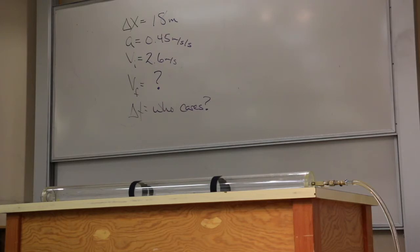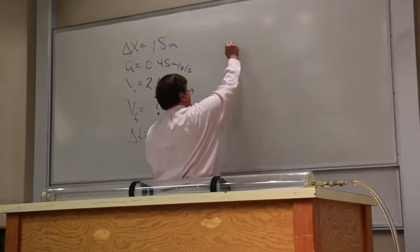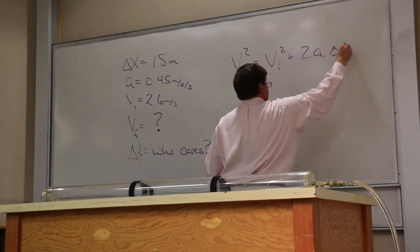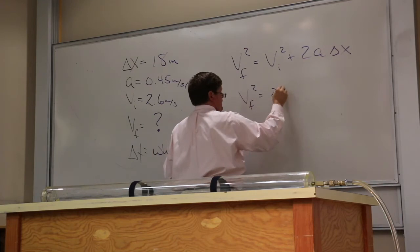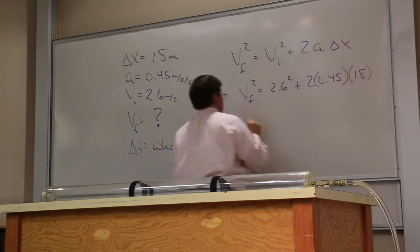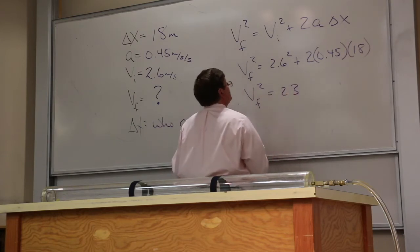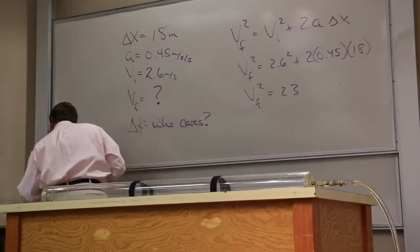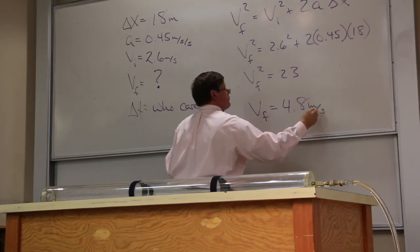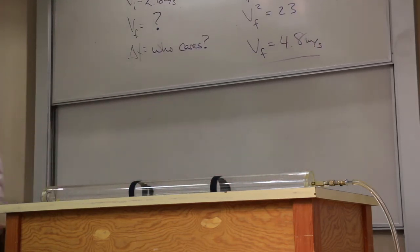Now, remember, I told you last day, these equations will be on the front page of your midterm. This table will not. Okay? But we didn't use the table. We just looked for delta T's. And we found that we needed to use this equation. V final squared is equal to V initial squared plus 2A delta X. V final squared is going to be 2.6 squared plus 2 times 0.45 times 18. That gives me V final squared is equal to 23. And is that right? Yes, 23. And that gives me a V final that's equal to 4.8 meters per second. Okay? Notice how my brain was turned off during that whole process.